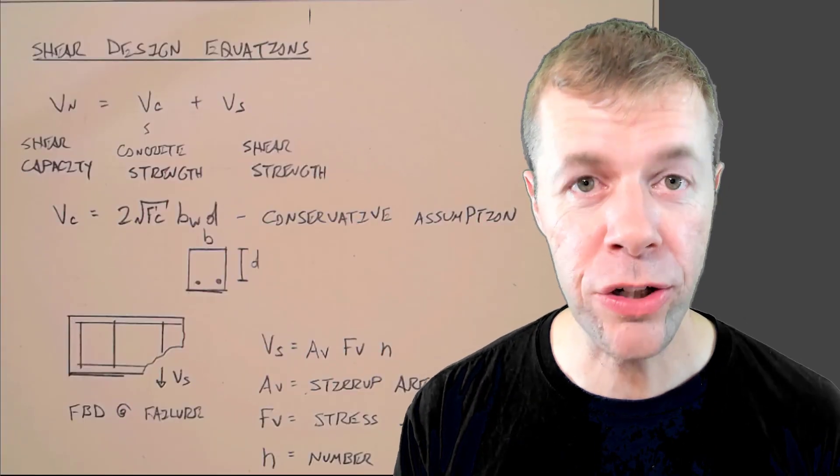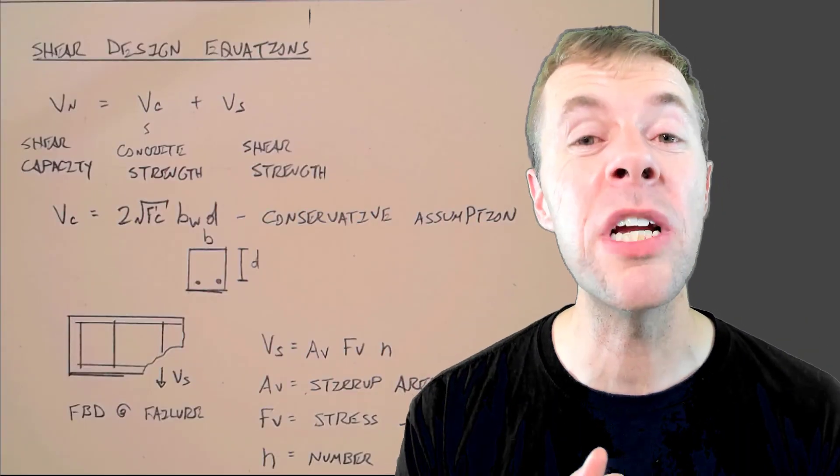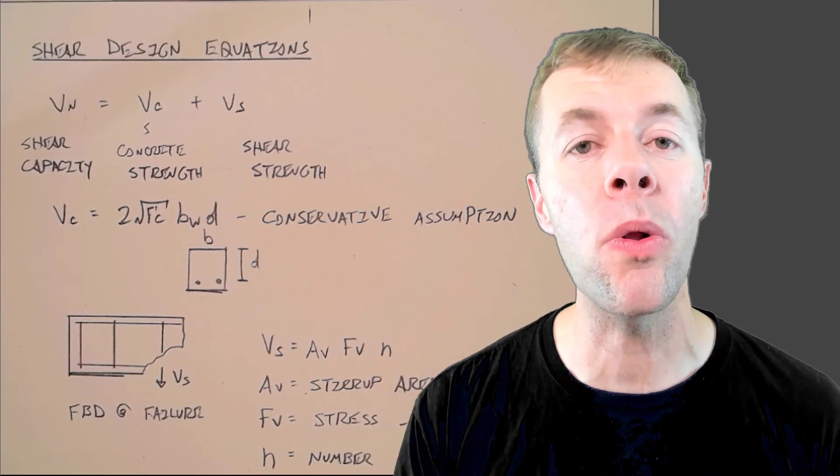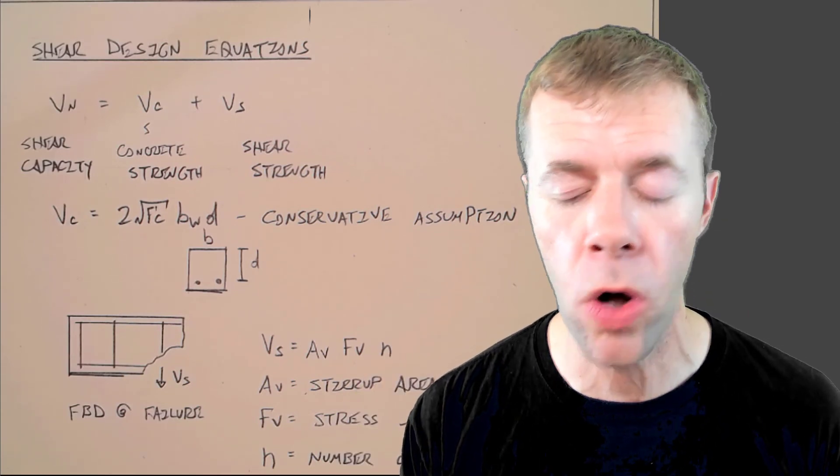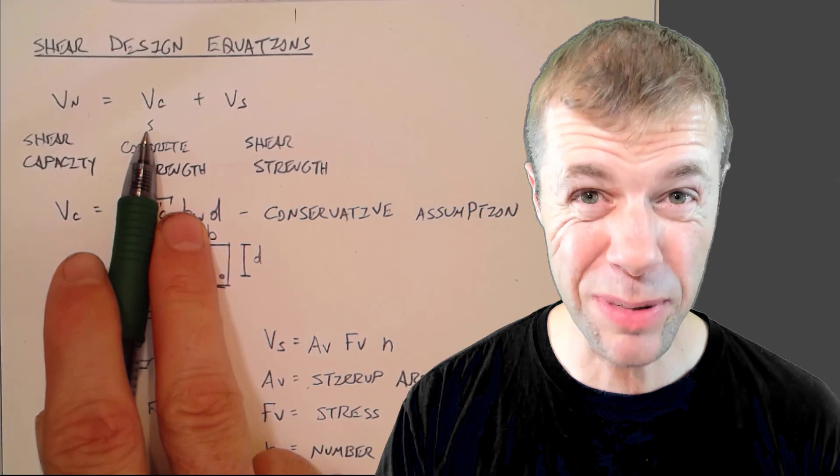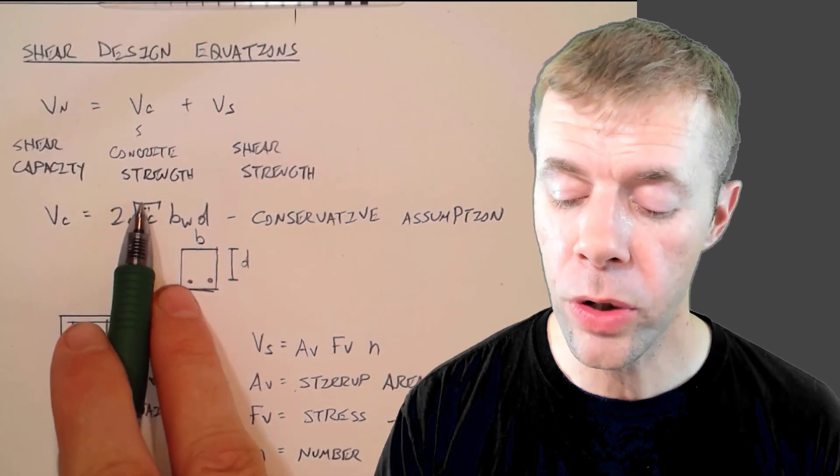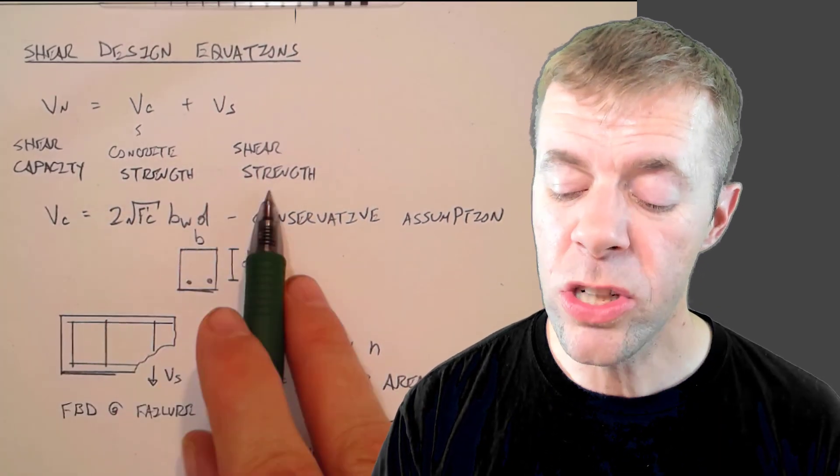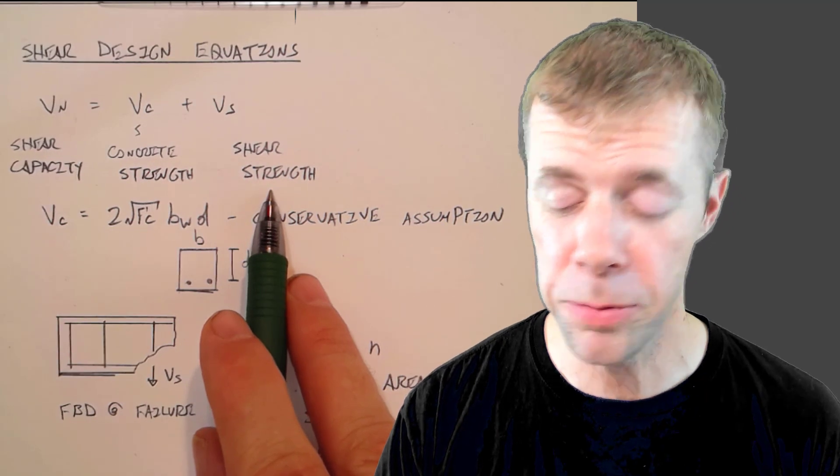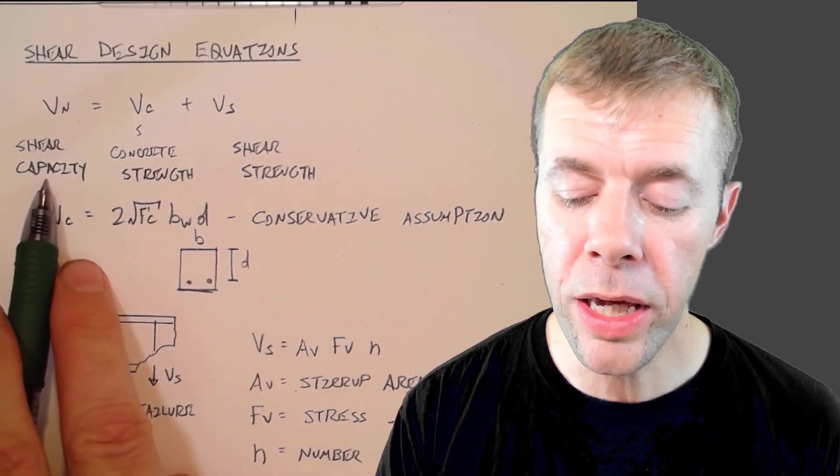The basic shear design equation was actually explained in a previous video. I'm going to link to it below. It's where I introduce shear design in reinforced concrete. We have V sub C, which is the strength of the concrete, and we have V sub S, which is the strength of the shear stirrups. We add those together and we get the shear capacity.